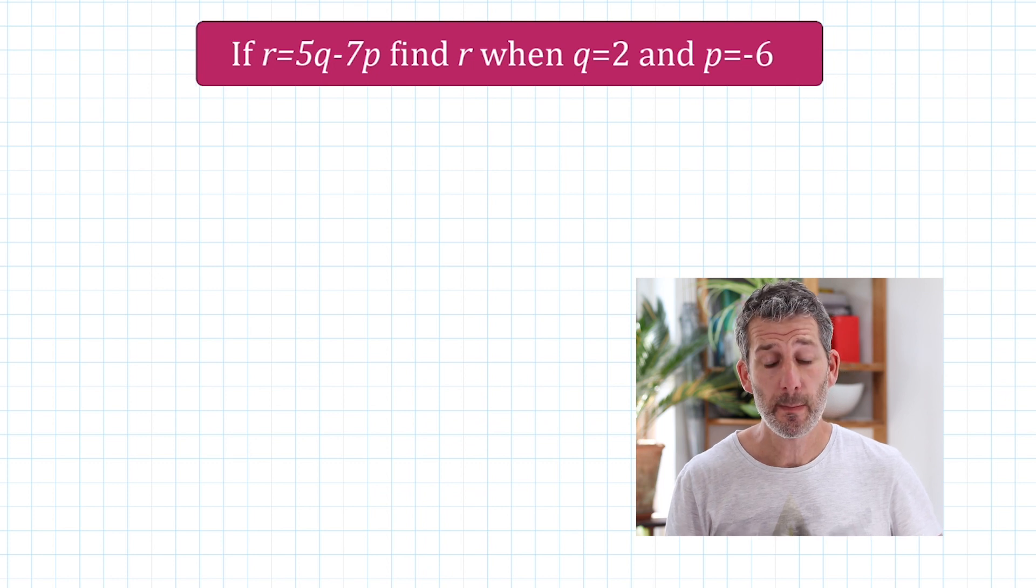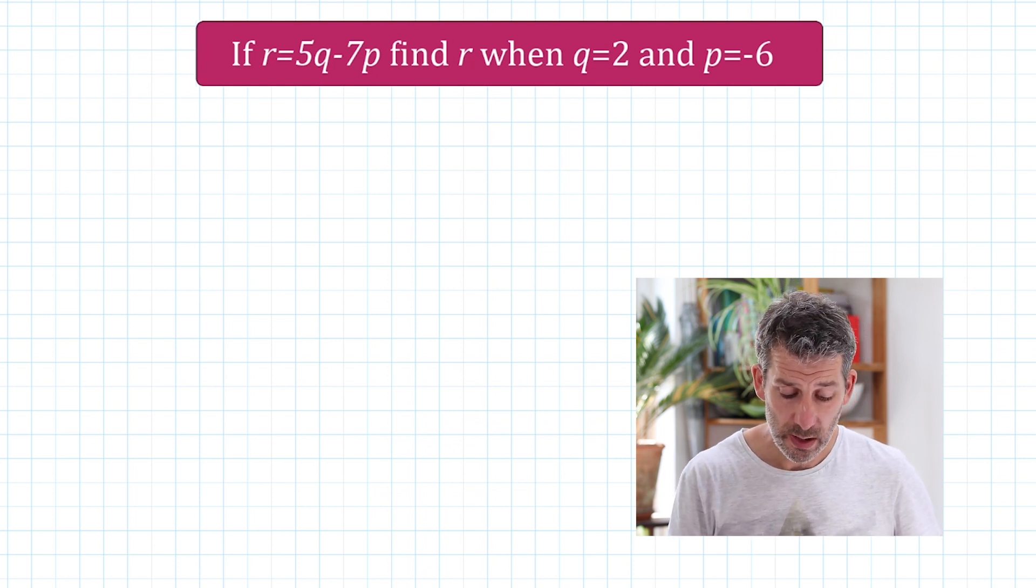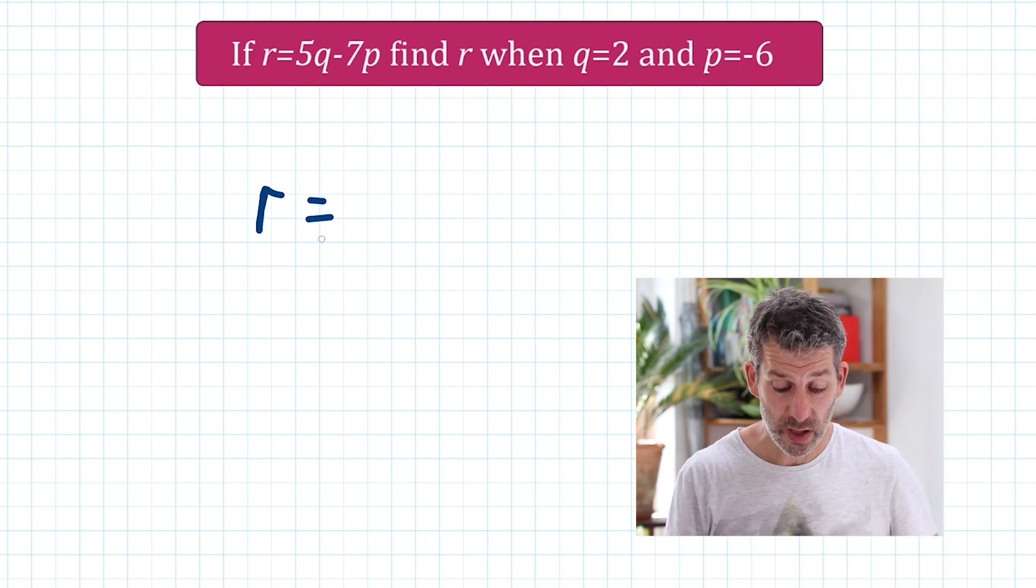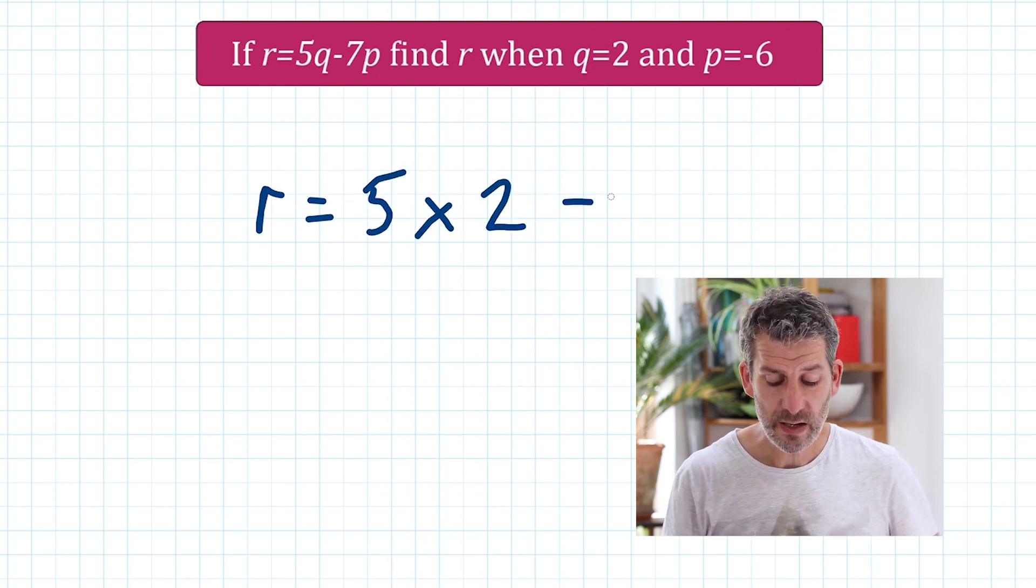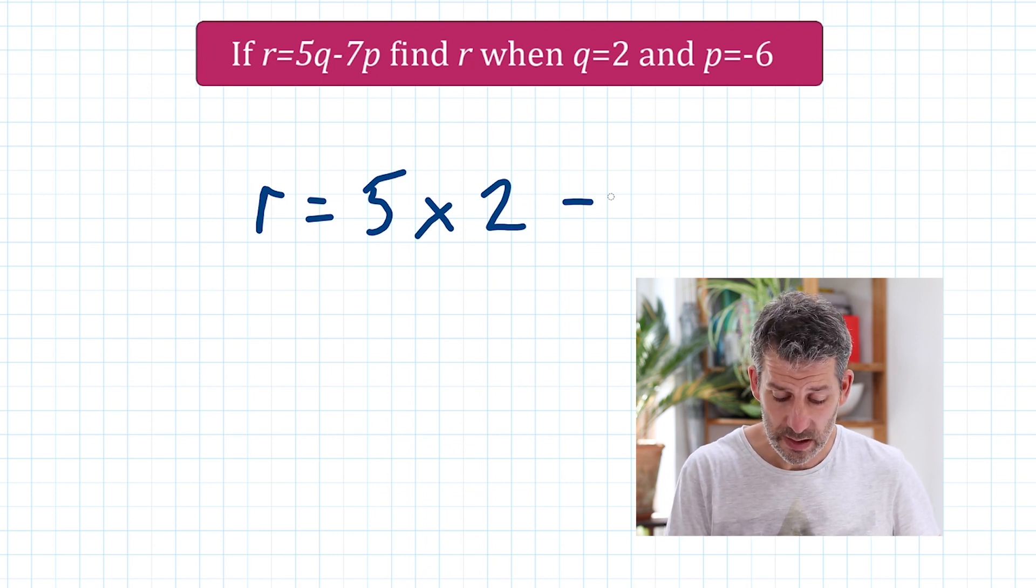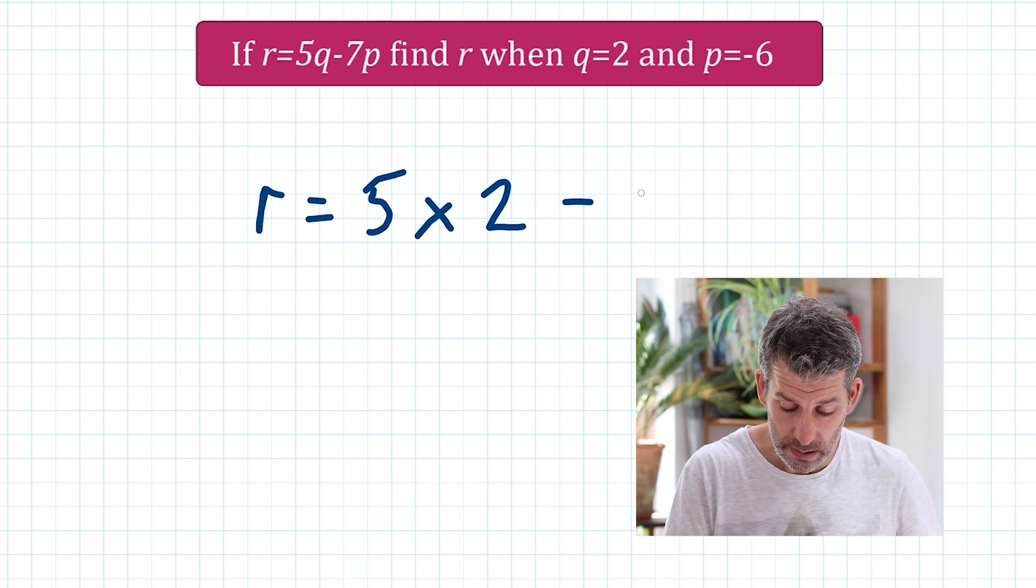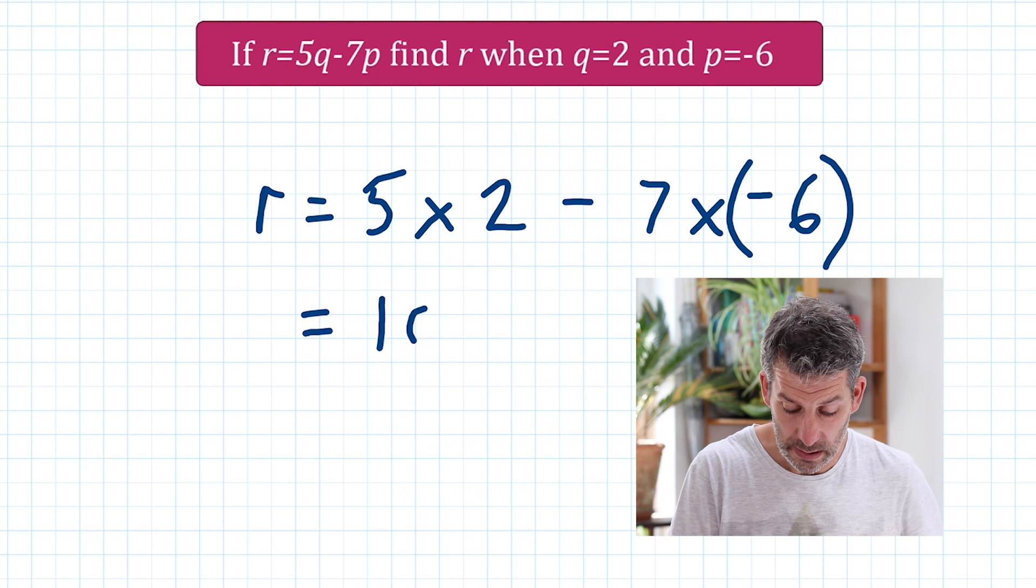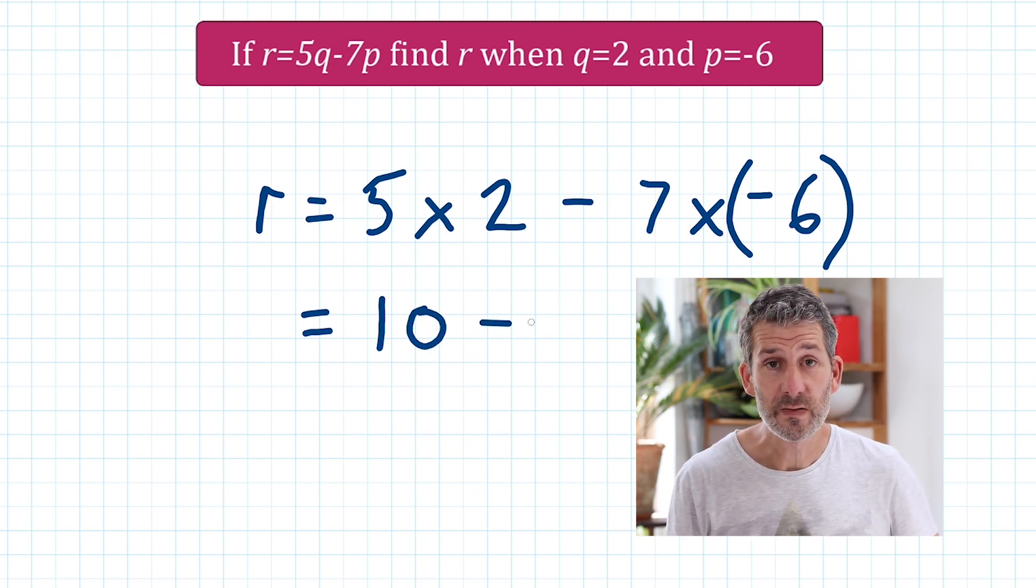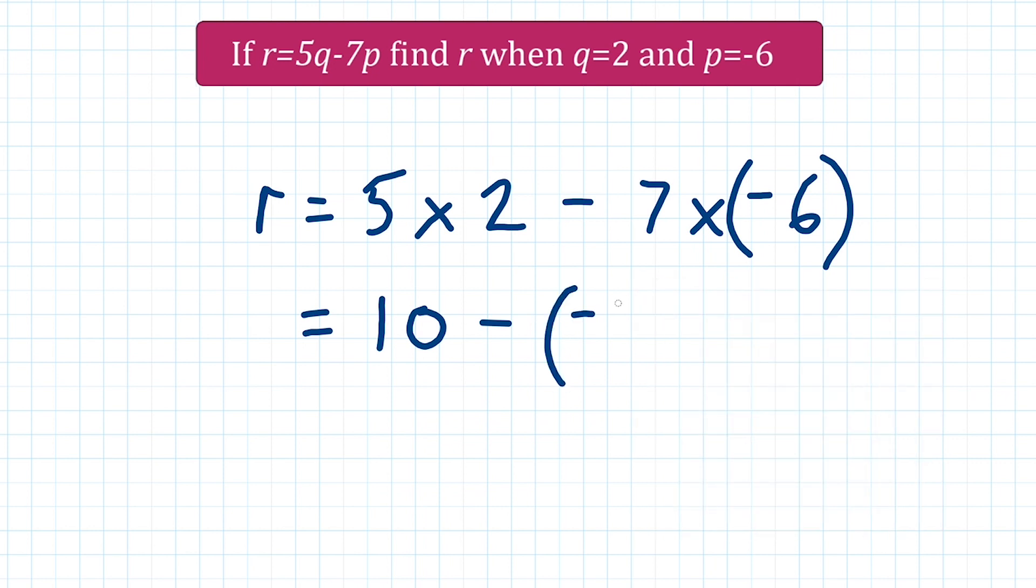If R equals 5Q minus 7P, find R when Q equals 2 and P equals negative 6. OK, well, we're told that Q is 2. So R is going to be equal to, well, it's 5 times Q. Well, Q is 2. So 5 times 2. And then minus 7 times P. P is negative 6. So minus 7 times negative 6. Minus 7 times negative 6. Let me put that in brackets. Right, let's work those out. So 5 times 2 is 10. It's a nice easy one. And I'm taking away 7 times negative 6. That's negative 42. So I'm taking away negative 42. And when you subtract, take away a negative, it's the same as adding on. It's going to move you up the number line. So 10 add 42, really, which is 52.